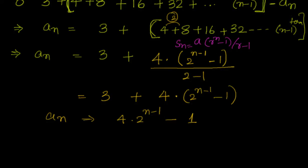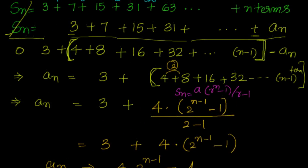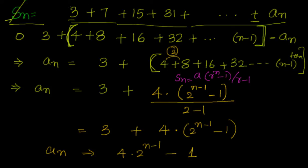Let's verify. For n = 1: 4·2⁰ − 1 = 4 − 1 = 3. Correct. For n = 2: 4·2¹ − 1 = 8 − 1 = 7. Correct. For n = 3: 4·2² − 1 = 16 − 1 = 15. Correct. Now that we have aₙ, finding Sₙ is straightforward.